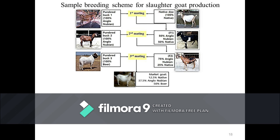The final cross involves mating the F2 doe with a purebred Boer buck to produce terminal progenies with a bloodline of 50% Boer, 37.5% Anglonubian, and 12.5% native. The terminal offspring produced are called three-way crossbreed goats. Based on a study conducted at the CLSU Small Ruminant Center, three-way crossbreed kids can have a birth weight which is 91% heavier than native kids. Three-way crossbreed goats can reach a mature weight about 54% heavier than that of native goats, and can be sold as slaughter animals for chevon production. Male offspring produced during the upgrading process can also be sold as slaughter animals.